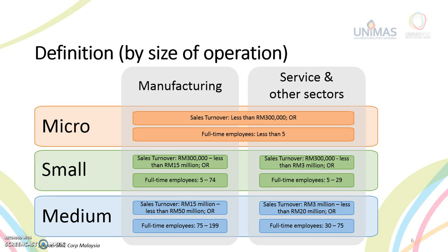A medium-sized business in manufacturing has full-time employees between 75 to 199 workers, whichever is lower. In the service or other sector, a small-sized business has sales turnover between 300,000 ringgit to less than 3 million ringgit, or has full-time employees between 5 to 29 workers, whichever is lower.